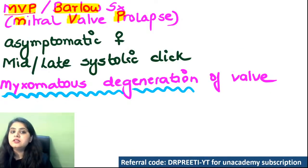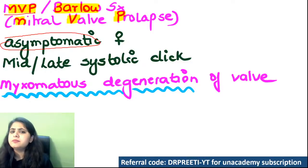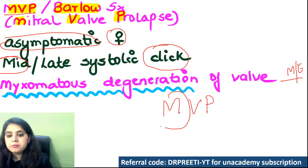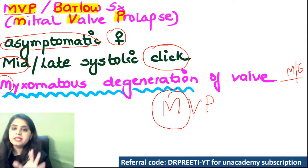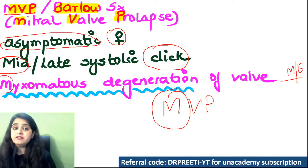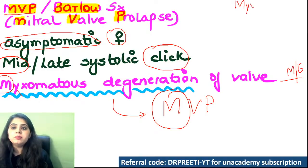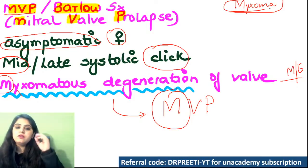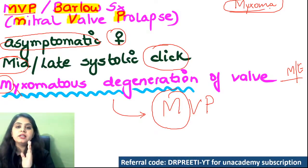Make it a rule: in the heart, if you see the word myxomatous, you only have to think of two things — one is myxomatous degeneration of the valve, which points towards mitral valve prolapse; and any tumour, if myxomatous material is mentioned, it's the most common benign tumour of the heart — myxoma. The word myxomatous should always give you two differentials: mitral valve prolapse or cardiac myxoma.